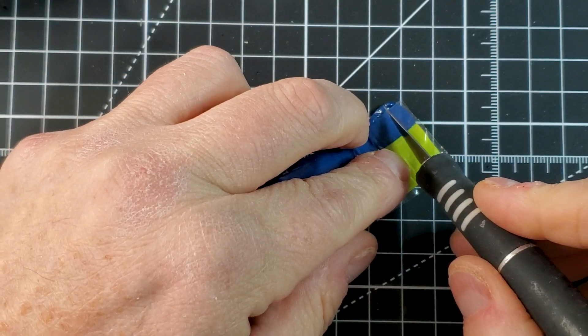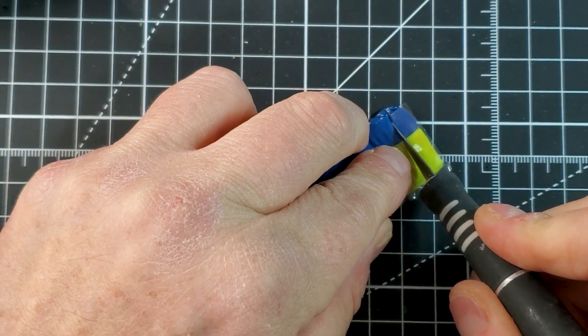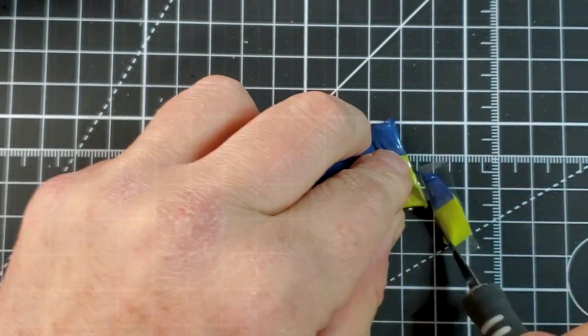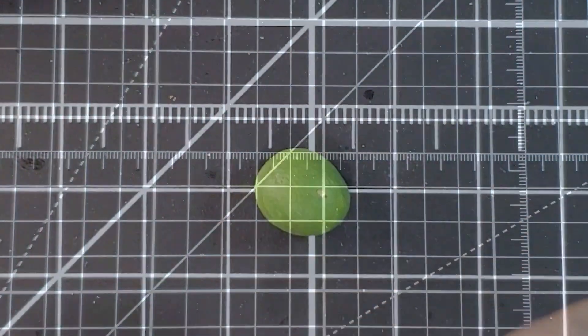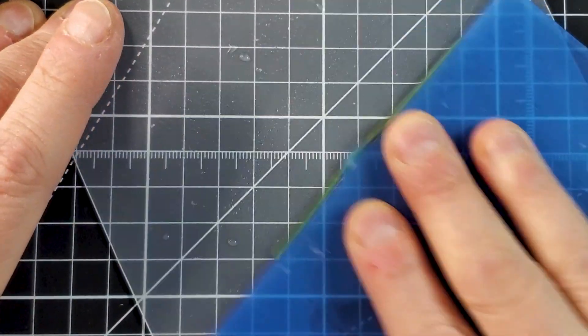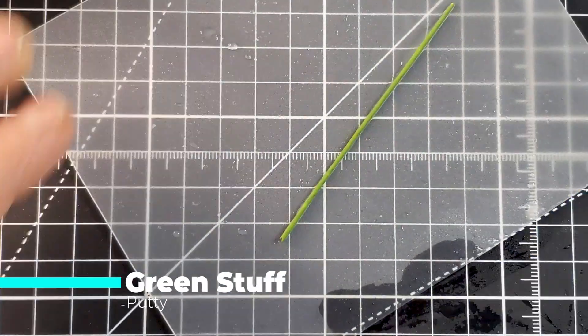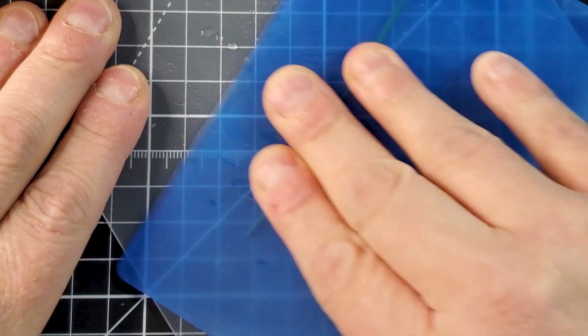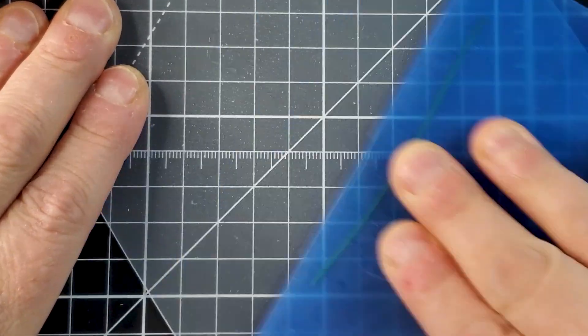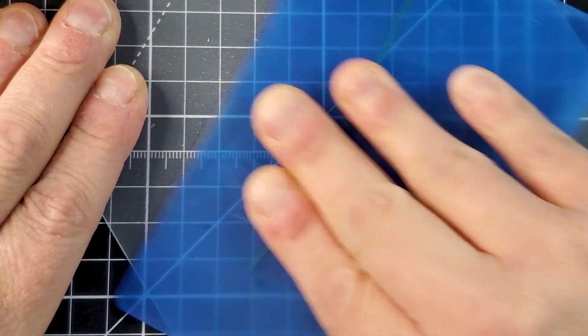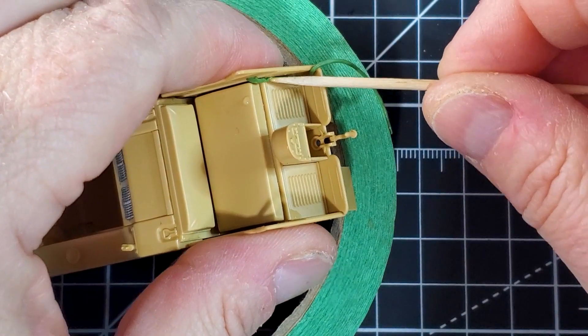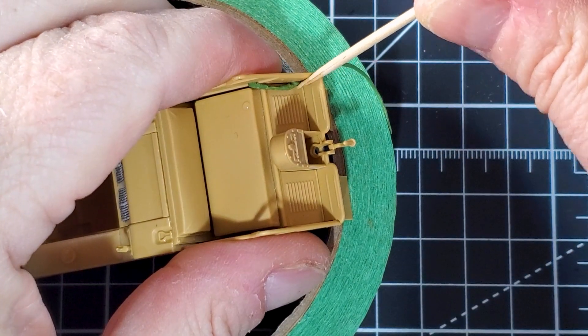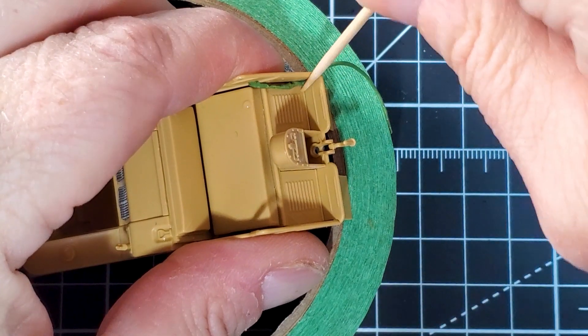In the next step we will do some weld seams. So I'm using Green Stuff, sorry I have a kind of a brain freeze. It's a two-part epoxy putty that you just mix together and you just roll a small sausage, and you will be able to do your weld seams this way. I did a full video on the weld seams, I will put the link in the description below and also on the top right corner if you want to look through it.